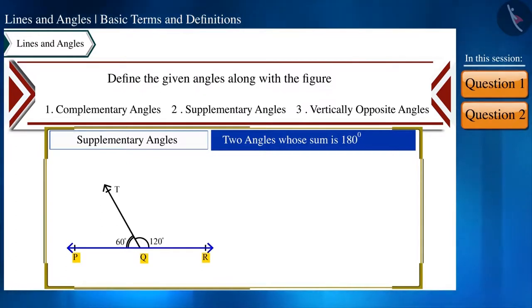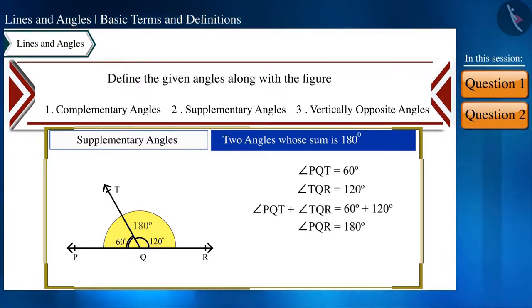In angle PQR, the measure of angle PQT is 60 degrees and the measure of angle TQR is 120 degrees. On adding the two we get 180 degrees. So we can say that angle PQT and angle TQR are supplementary angles.